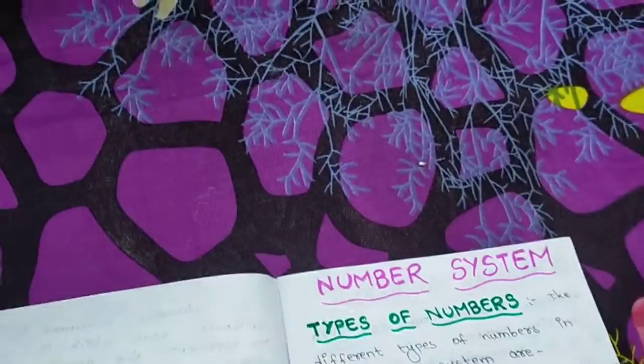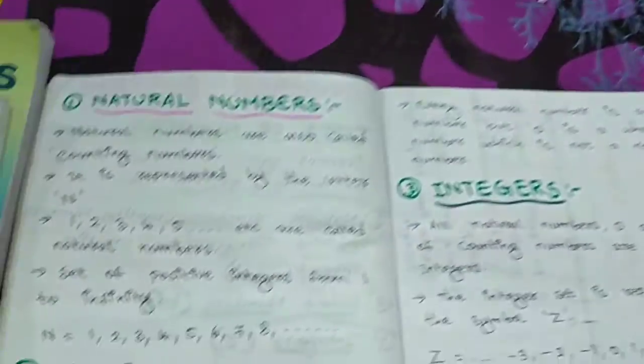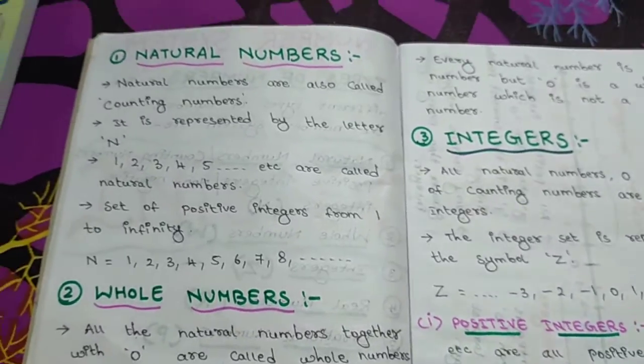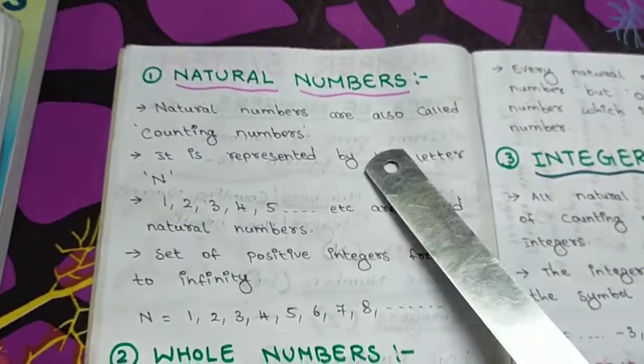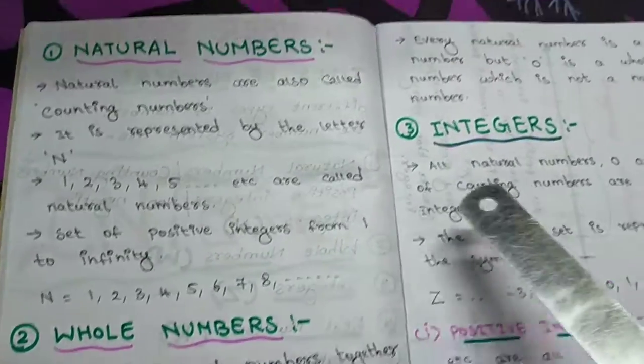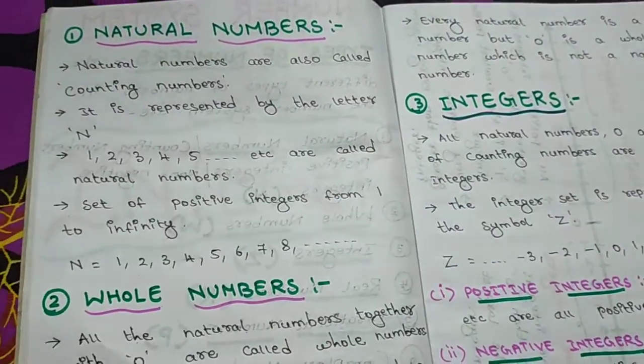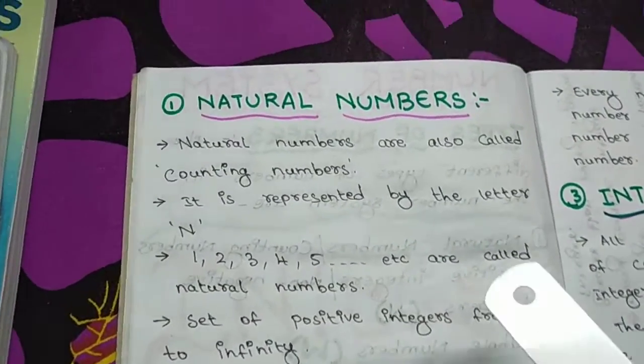As a child, when you were in second and third class, you also learned about even numbers and odd numbers — they are also there. Now, among all these types, what is most important for learning the integers chapter is: you should know about natural numbers, whole numbers, and integers. These three things are important for you to learn at present.